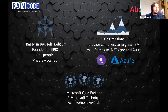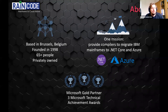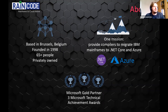We're a company founded in Brussels, Belgium in 1998 — just over 20 years old — with about 65 people and completely privately owned with no venture capital. Our core mission is providing compilers and other tools to migrate IBM mainframes to .NET, .NET Core, and Azure. We've received three Microsoft Technical Achievement Awards over the years — not sales awards, but technical innovation awards — showing we use their technologies in a very innovative way. We're also a Gold Partner with Microsoft, which is why you'll see us doing a lot on Azure.